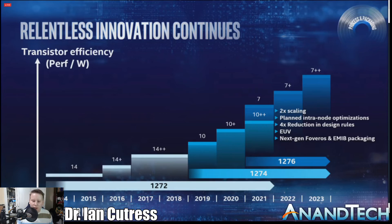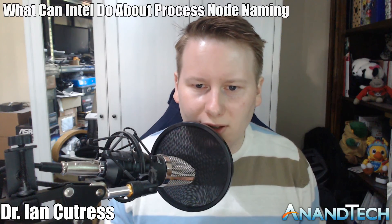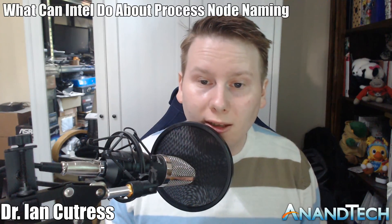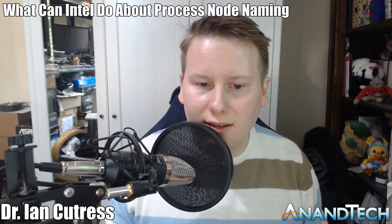Give it a few months after that initial pushback of 'why have you changed it, you're just trying to compete on marketing' — I think it's a fair change. It simplifies things. And of course we can always get graphs like this on investor days and tech days where we can actually explain what each of the numbers means and how features like EUV are coming along.